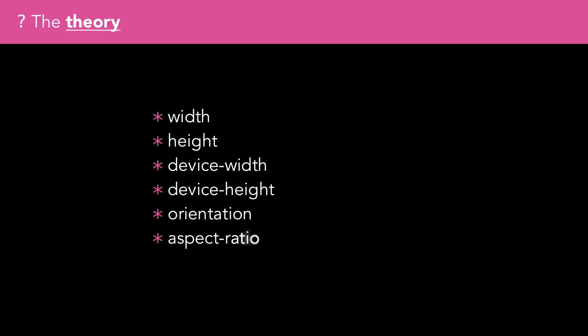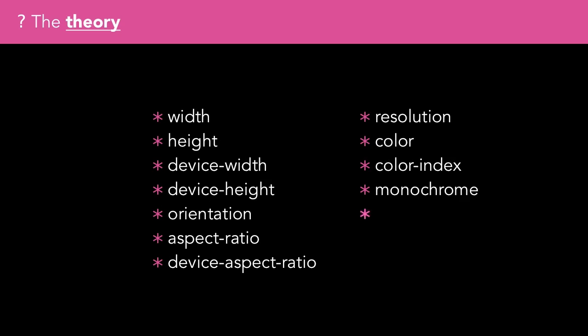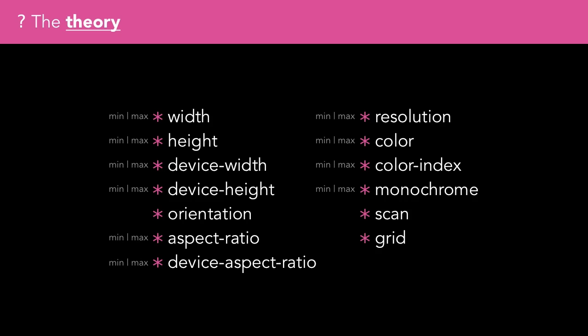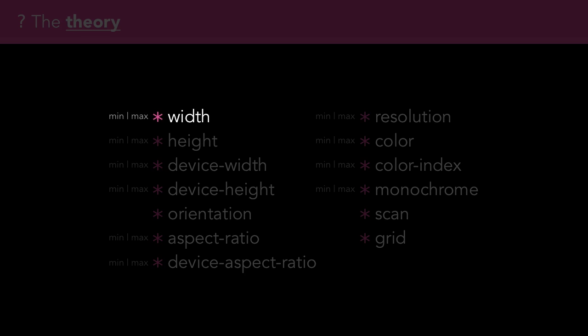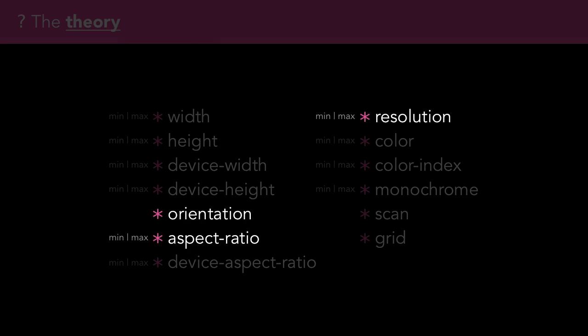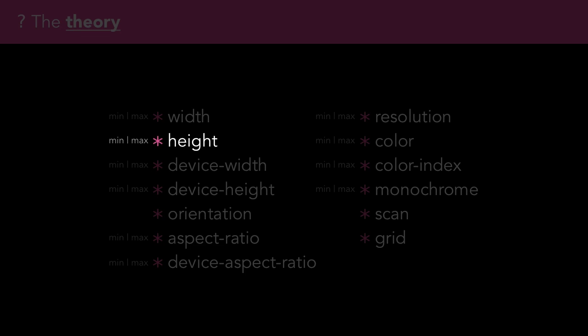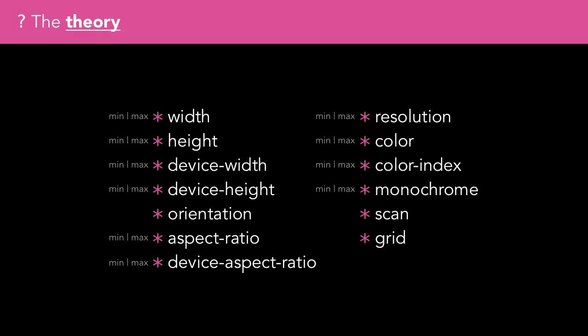There are a number of things we can query about the device: width, height, device-width, device-height, orientation, aspect-ratio, device-aspect-ratio, resolution, colour, colour-index, monochrome, scan or grid. Many of these have a corresponding min and max variety as well. I use min-width and max-width a lot, orientation, aspect-ratio and resolution occasionally, and min-height and max-height from time to time. I've never used the others as far as I can remember.